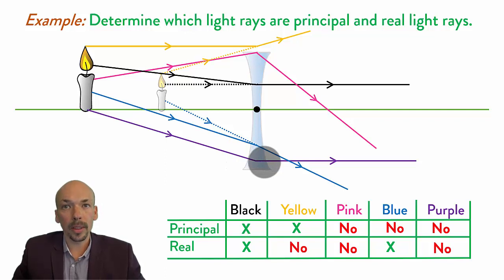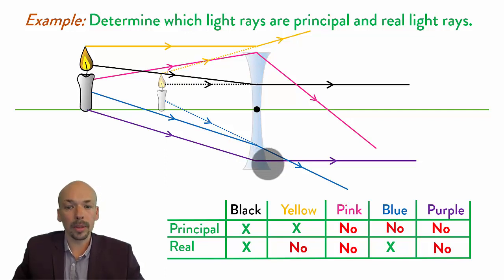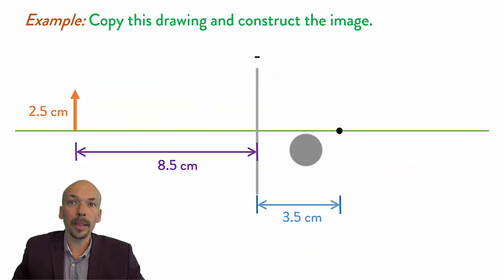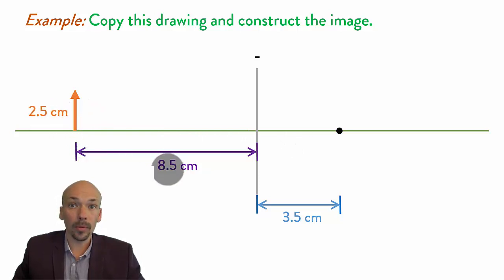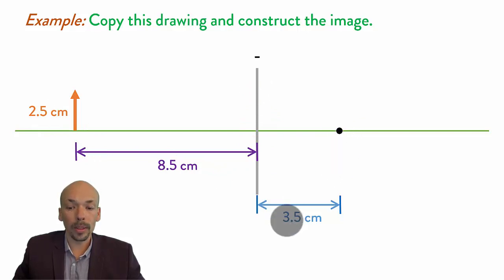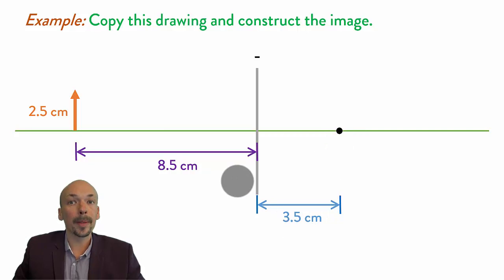This was a difficult example. If you didn't get it the first time, it doesn't matter, as long as you now understand why these are the answers. We are now going to our third example. Copy this drawing and construct the image — copy this one with the arrow of 2.5 centimeters, 8.5 centimeters away from the negative lens, and with a focus point 3.5 centimeters from this lens. You can draw it yourself and I will give you the answer.